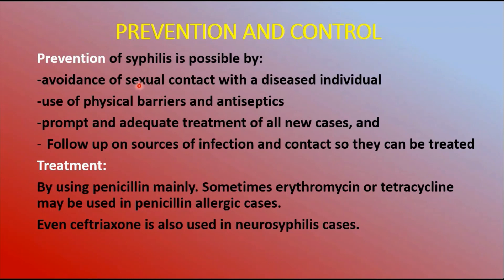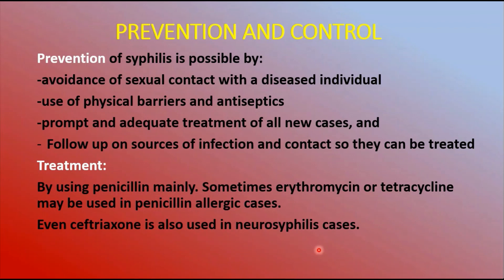Prevention and control of syphilis is possible by avoidance of sexual contact with infected individuals, use of physical barriers and antiseptics, prompt and adequate treatment of all new cases, and follow-up on sources of infection and contacts. Treatment is mainly with penicillin; erythromycin or tetracycline may be used in penicillin-allergic cases, and ceftriaxone is also used in neurosyphilis cases.